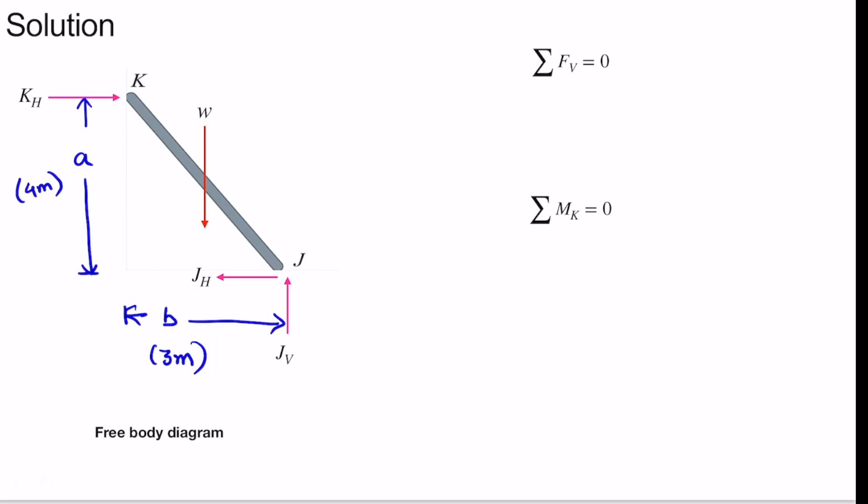We'll use summation of vertical force is 0. So what are all the vertical forces? The vertical forces are JV minus W equal to 0. This means JV comes out to be W, that is 10 kN. So we get the value of JV as 10 kN.